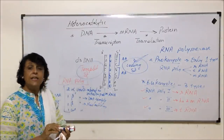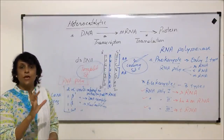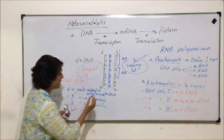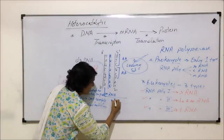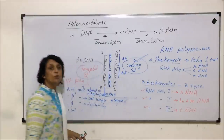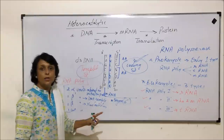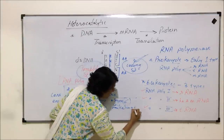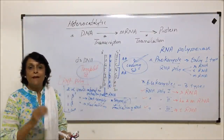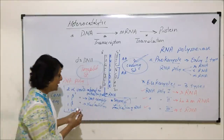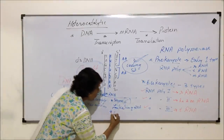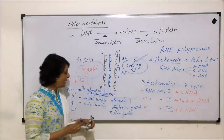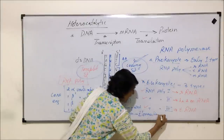These five subunits make the core enzyme — they are always together. There are two additional subunits that join and detach as required. The first is the sigma unit, which is responsible for initiation of the RNA chain. It attaches only when initiation has to take place. The second is the rho factor, which is responsible for elongation and termination of the chain.